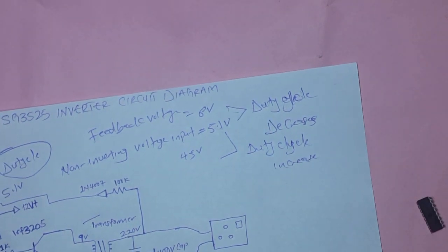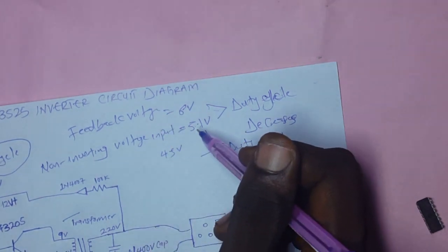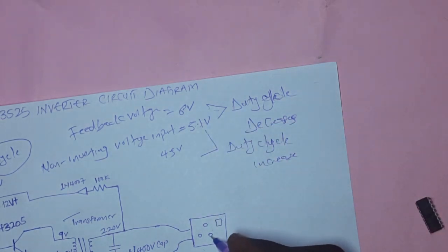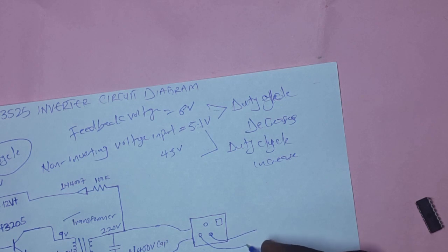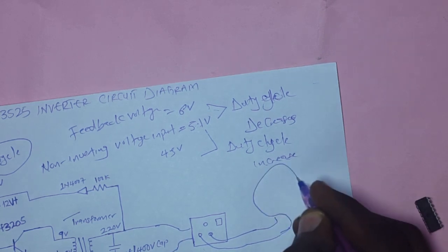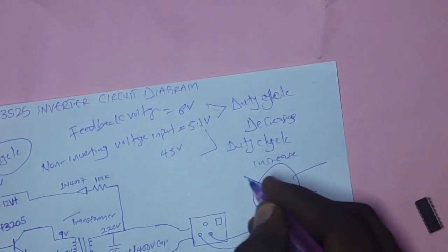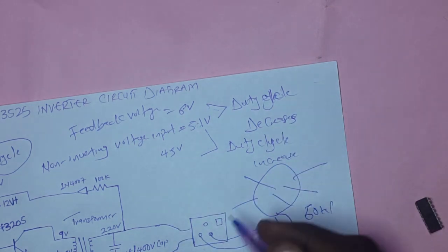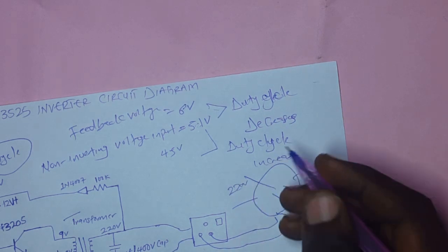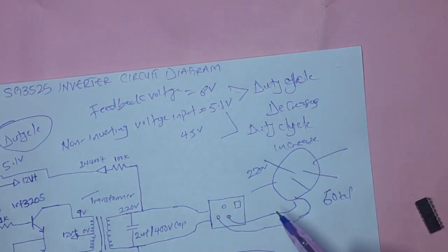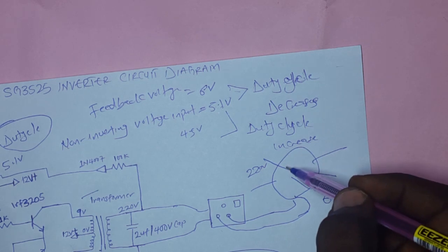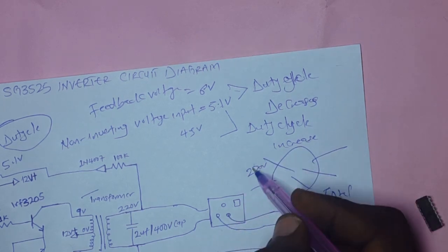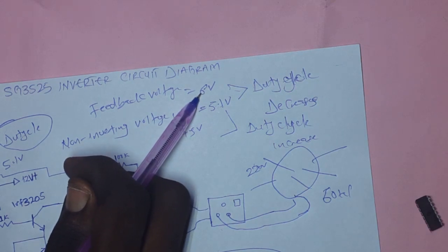What I'm showing here is that, for instance, you put a load here. Let me say you put a load of your electric bulb of 60 watts, and the voltage here is 220 volts. The feedback voltage is 6 volts. That simply means that there will be a decrease in this 220 volts. However, it will affect this feedback.